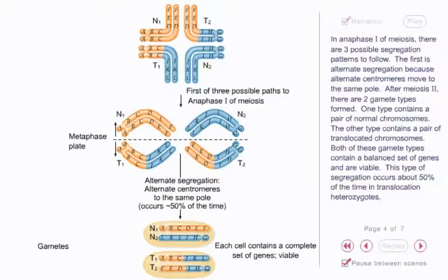The other type contains a pair of translocated chromosomes. Both of these gamete types contain a balanced set of genes and are viable. This type of segregation occurs about 50% of the time in translocation heterozygotes.